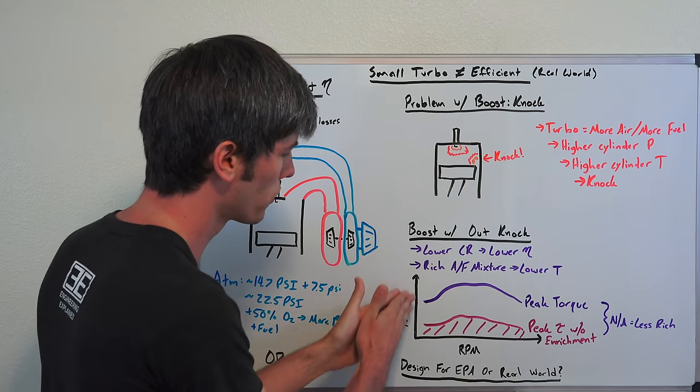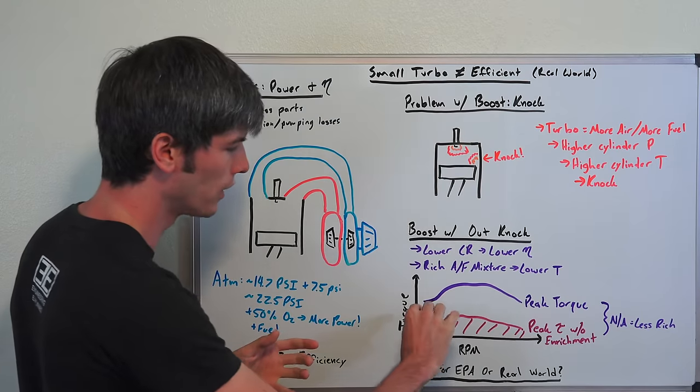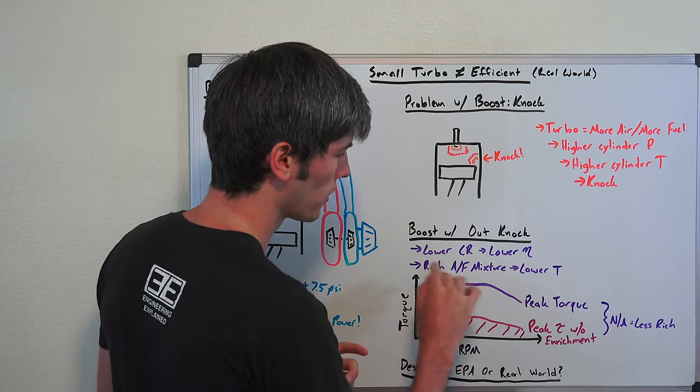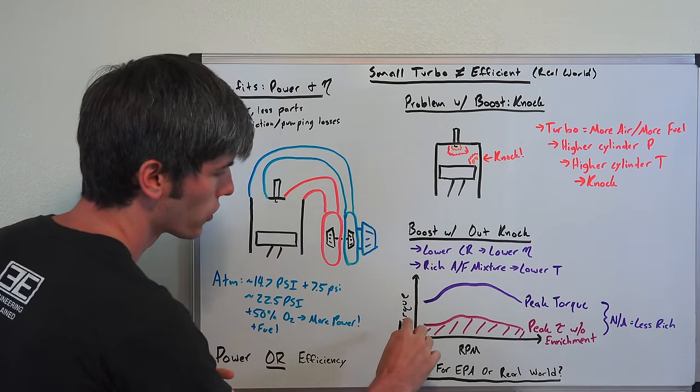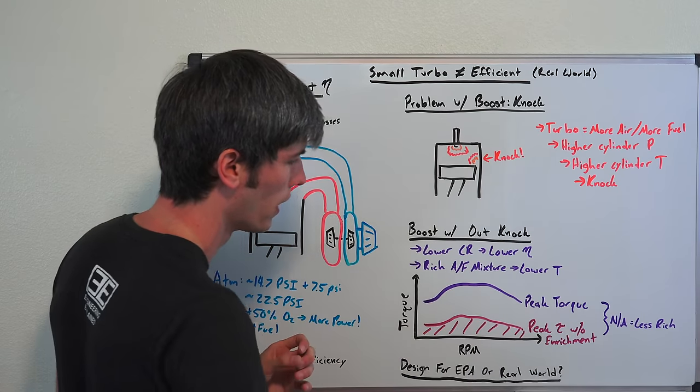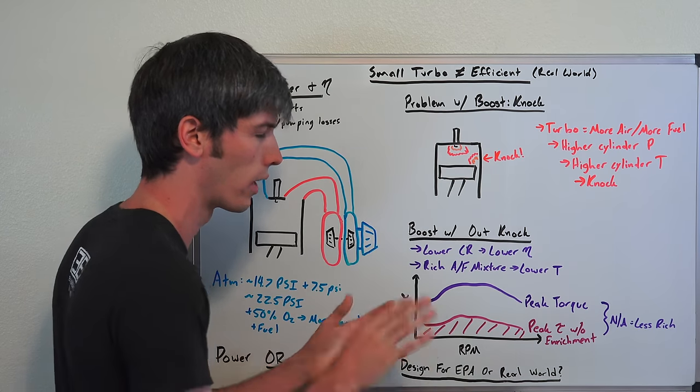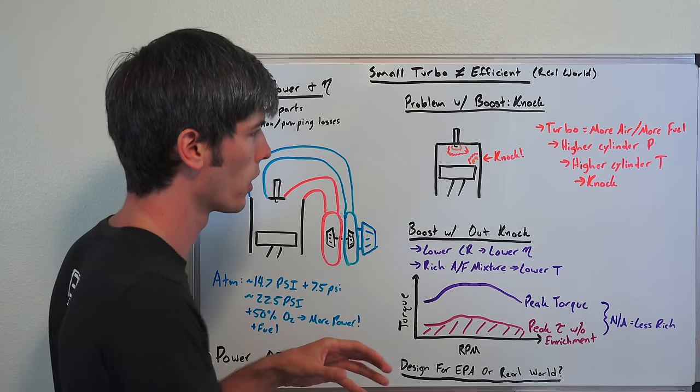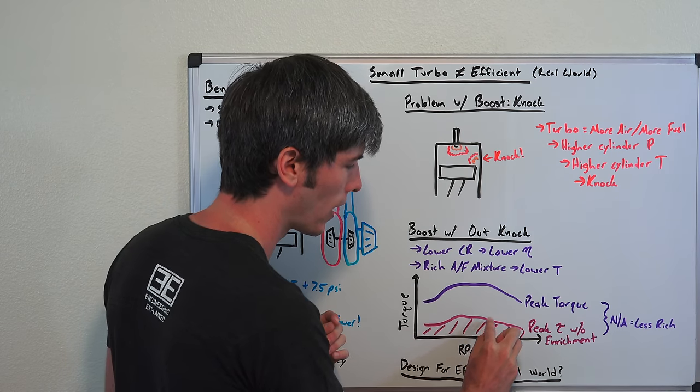And so if you were to look at a graph of torque here on the vertical axis and then RPM on the horizontal axis, and you look at the torque curve of a turbocharged engine, it'll start somewhat low, come up as that turbo builds boost, and then taper off as it starts to get too much speed for that turbocharger. And so you look at this is what your peak torque is, what the engine is totally capable of. And then if you were to look at how much torque can you create, how much torque can you ask for, how much throttle can you ask for from that engine, before it has to start enriching that air fuel mixture in order to avoid knock.